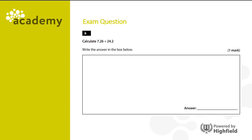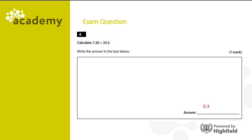Here's another example exam question. Calculate 7.26 divided by 24.2. Again pause the video, have a go at the question and press play when you're ready to compare answers. Did you get it right? The answer is 0.3. But let's see how we come to that answer with the workings out.